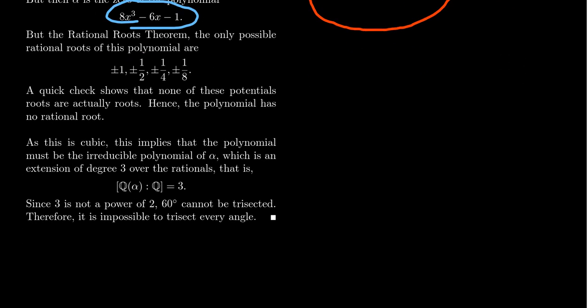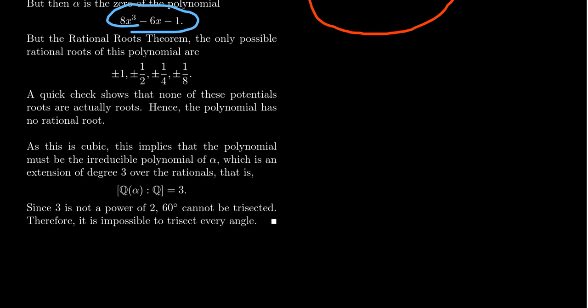Since this is a degree 3 polynomial, if we take Q adjoin alpha and look at its degree over Q, we end up with 3. But a property of constructible numbers is if you take Q adjoin a constructible number alpha and you look at its field extension over Q as a degree, this always looks like a power of 2.